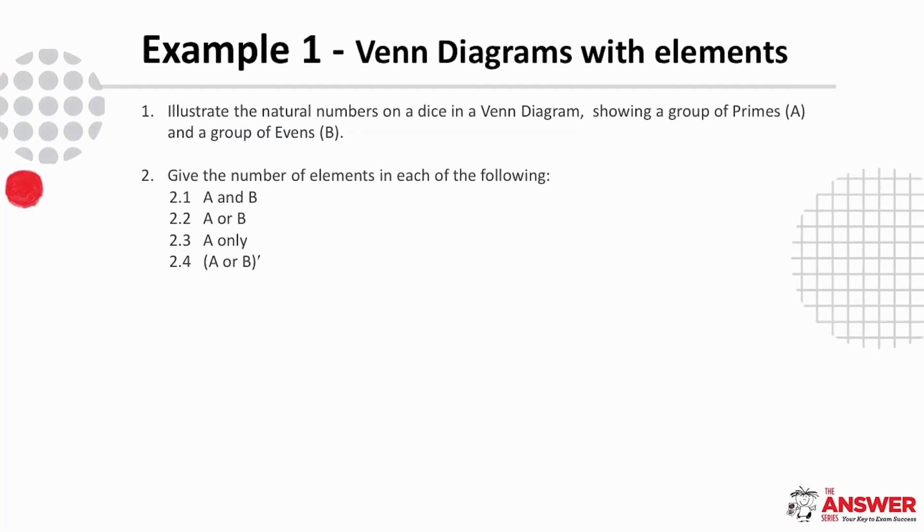Example 1 is a Venn diagram with elements. The first part of the question is asking us to illustrate the natural numbers on a dice in a Venn diagram showing a group of primes for A and a group of evens for B. The second part of the question is asking for the number of elements across several scenarios.